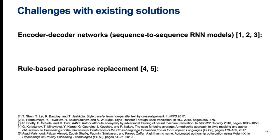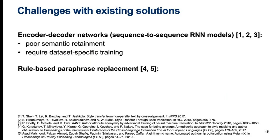Current approaches to style transfer tend to fall in two camps. Encoder-decoder networks are sequence-to-sequence architectures typically using recurrent neural networks like LSTMs. They try to produce a style-neutral latent encoding of the input and then decode it to the target style. Even though they are currently the dominant approach to style transfer, they exhibit quite poor semantic retainment and also require separate training for each dataset. Rule-based paraphrasing allows better control of semantic retainment but tends to have limited applicability.